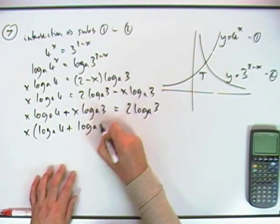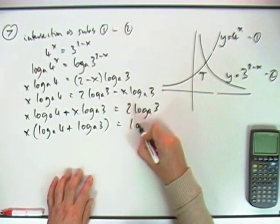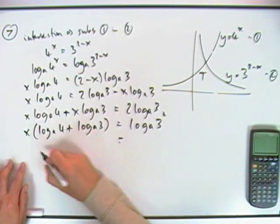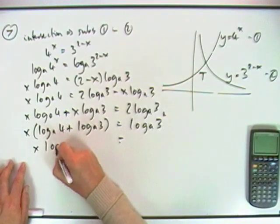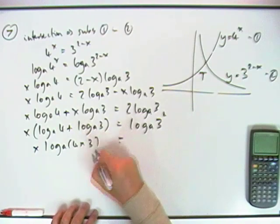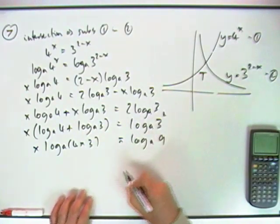Plus log A of 3 equals, I'll pop it back in now, log A of 3 squared. Next time I meet that I'm going to make it 9. So I've got x log A of the product. I'll just show that by saying 4 times 3, equals log A of 9.